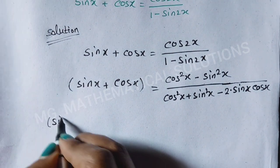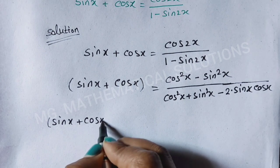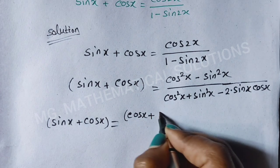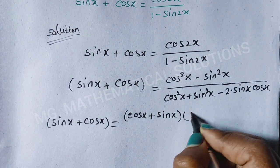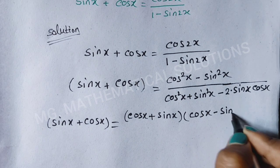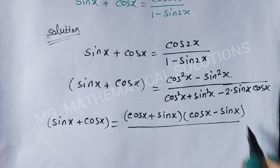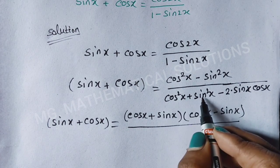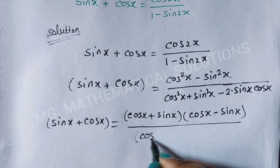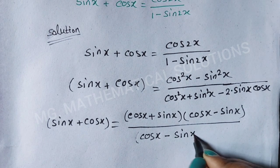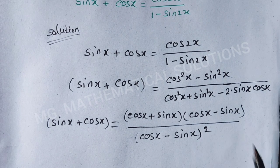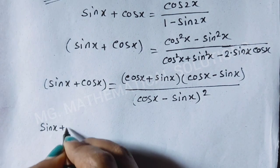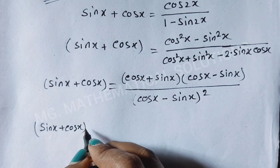So sin x plus cos x equals — now we use the formula a² minus b², so the numerator becomes (cos x + sin x)(cos x − sin x). The denominator is of the form (a − b)², where a is cos x and b is sin x, giving (cos x − sin x)².